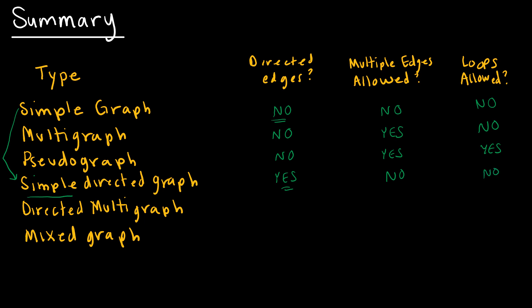A directed multigraph, again, is going to be exactly like this guy, where yes, I'm going to have directed edges, and yes, I can have multiple edges allowed, which is why it's a multigraph, but no, I still cannot have loops.